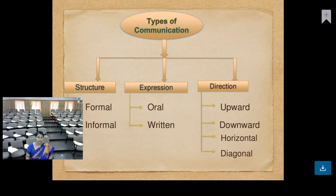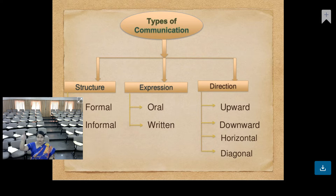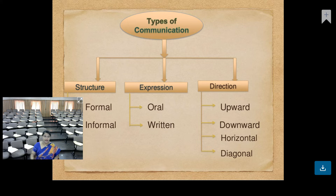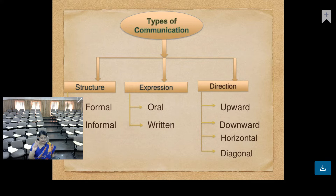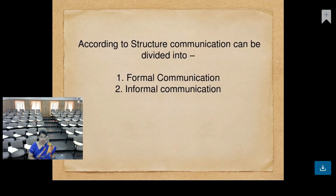Communication can also be classified on the basis of direction. It can be upward communication — that is from bottom to top. Downward is top to bottom. Horizontal is in the same line, or it can be diagonal. So totally, types of communication can be broadly classified under 3 categories: structure, expression, and direction. Structure gives 2 types, expression 2 types, and direction 4 types — so totally 8 types of communication.